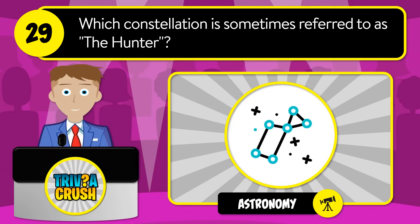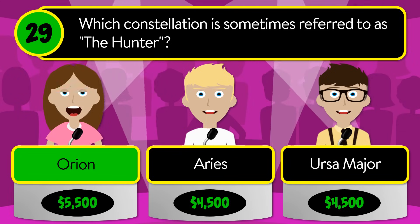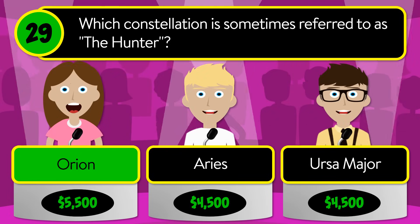Question number twenty-nine: which constellation is sometimes referred to as the Hunter? Is it Orion, Aries, or Ursa Major? The correct answer is Orion.